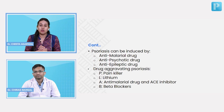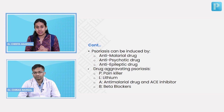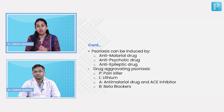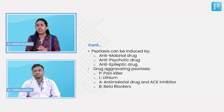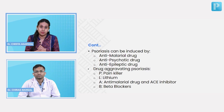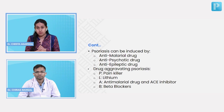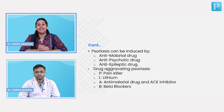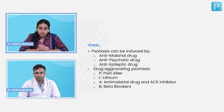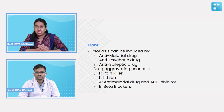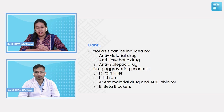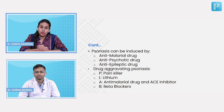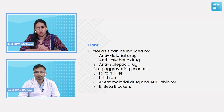Many drugs are implicated in causing new lesions or aggravating existing psoriatic lesions. The mnemonic to remember drug-induced psoriasis is PLAB: P for painkillers including NSAIDs, L for lithium, A for anti-malarials and ACE inhibitors, and B for beta blockers. Whenever you suspect psoriasis, always check drug history for these agents.